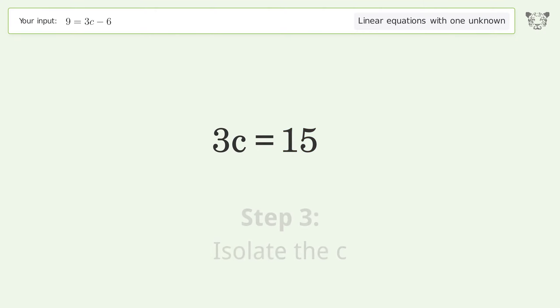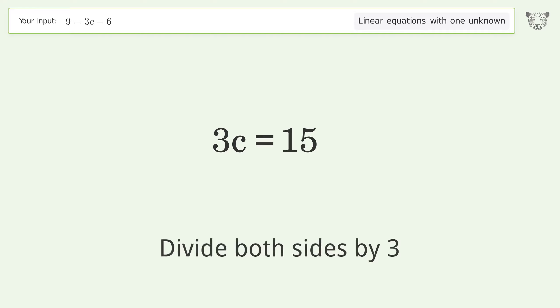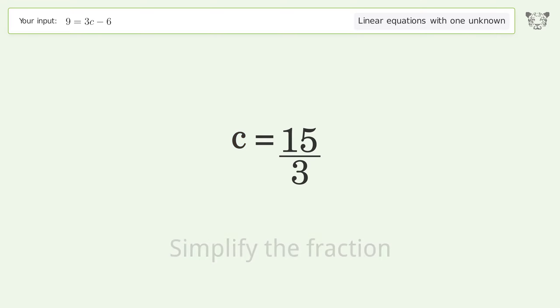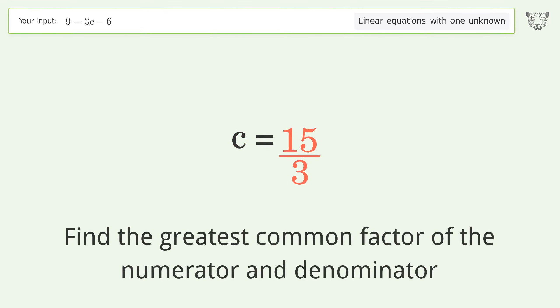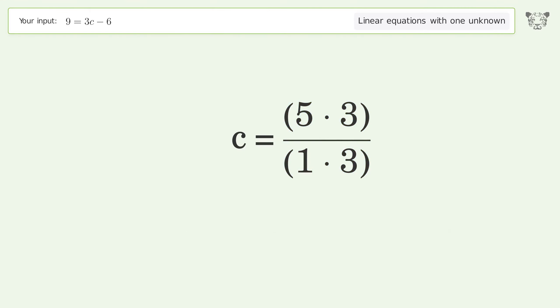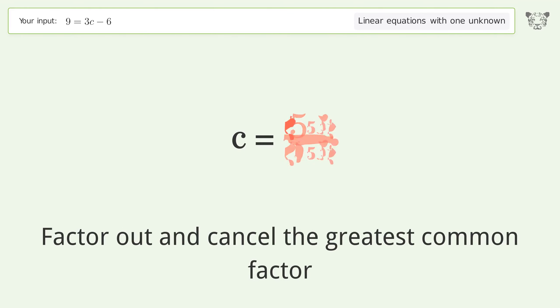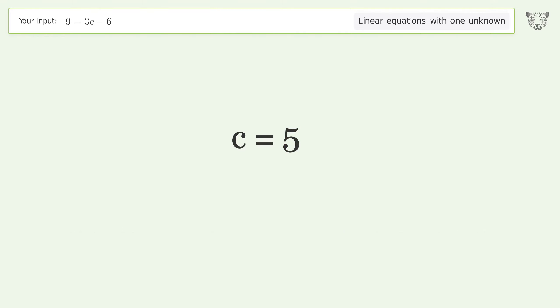Isolate c by dividing both sides by 3 and simplify the fraction. Find the greatest common factor of the numerator and denominator, then factor out and cancel the greatest common factor. And so the final result is c equals 5.